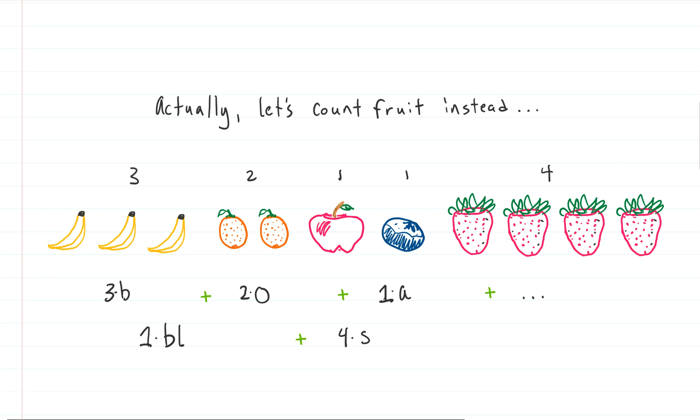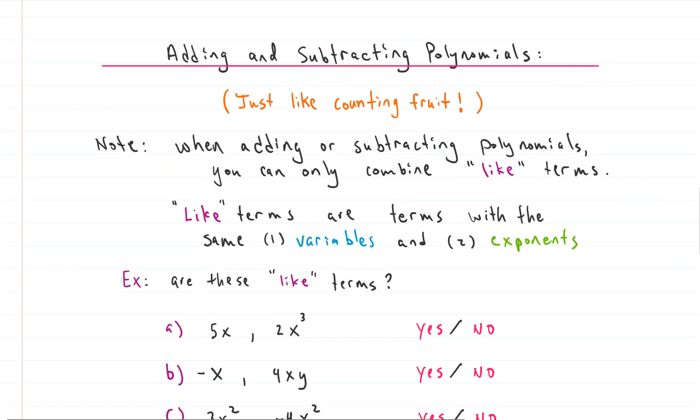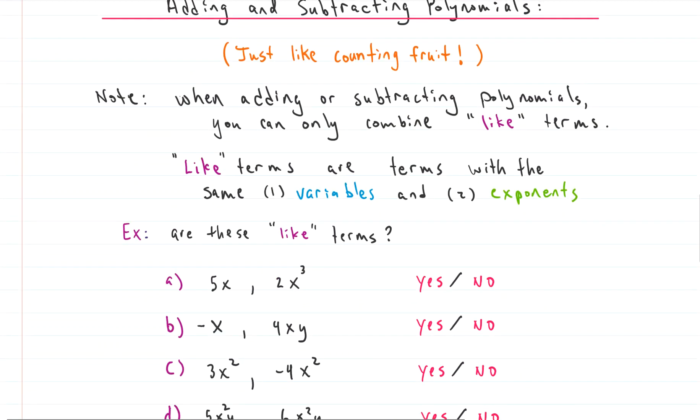This kind of looks like a polynomial, right? We have 3B plus 2O plus 1A plus 1BL plus 4S. There you go. It's actually a polynomial right there. So we don't add together the 3B and the 4S because they're not the same fruit. B and BL, those kind of look the same, right? The B has a B in it. It just has that extra L. Can we add those? Nope. They're not the same fruit. So if you guys have this concept, you're good to go. You totally will rock this concept. So if we add and subtract polynomials, it's just like counting fruit.